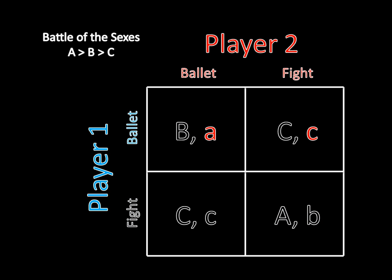Let's start with the Ballet-Ballet equilibrium. Does Player 2 have a profitable deviation? The answer is no. If she sticks to Ballet, assuming Player 1 is playing Ballet, she earns A. If she switches to Fight, she earns C. But A is greater than C, so this is not a profitable deviation. Now, what about Player 1? If he maintains his Ballet strategy, given that Player 2 is also playing Ballet, he earns B. If he switches to Fight, he gets C instead. B is greater than C, so Player 1 doesn't have a profitable deviation. Ballet-Ballet is mutually optimal — that means it's a pure strategy Nash equilibrium.